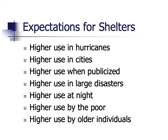If we're in charge of emergency management, we may have one very specific question about sheltering: how many people should I plan for? This is a very difficult question, and research provides different findings, ranging from 5% to 20% of the population or even higher. What we do know is that shelter use is more likely in hurricanes, more likely in cities, and more likely when it's publicized. We might anticipate more shelter use in larger disasters, at night, and among those who are poor, lack resources, or are older individuals.